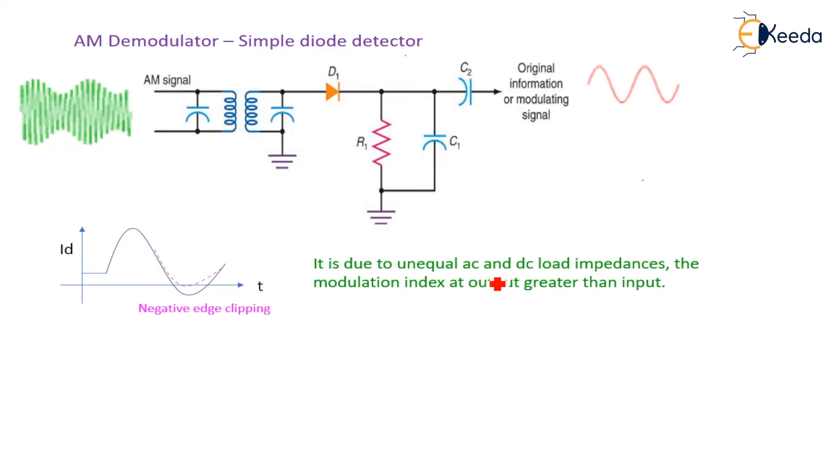The second distortion is diagonal clipping. Diagonal clipping means the signal should follow the dotted line and change like this, but it is changing too fast. This is due to the AC load impedance acquiring a reactive component. When the AC load impedance acquires a reactive component, the current changes fast, so we observe diagonal clipping.